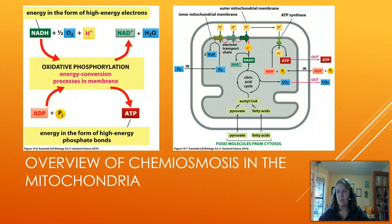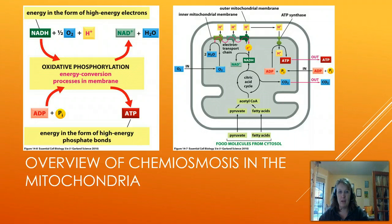Those electrons then pump protons across the membrane, and the protons come back through ATP synthase. As they pass back through, they generate ATP through the combining of ADP and inorganic phosphate, driven by the proton motive force. All we're doing is transferring energy from electron form to a phosphate bond — this is how we harness all the energy found in the food you ate for breakfast, lunch, or dinner.